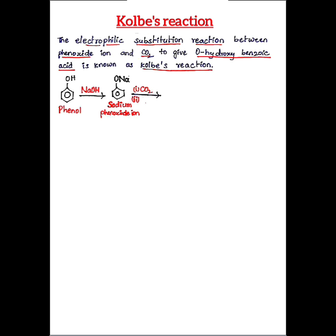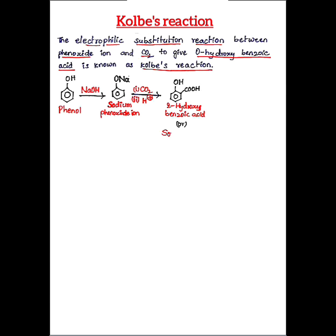Therefore, in the presence of carbon dioxide under acidic conditions (in the presence of H⁺), the CO₂ adds to the phenoxide ion. The -ONa group becomes -OH, and a -COOH group is introduced. The product obtained is 2-hydroxybenzoic acid, also commonly known as salicylic acid. This is the Kolbe-Schmitt reaction, where sodium phenoxide reacts with CO₂ under acidic conditions to give orthohydroxybenzoic acid.